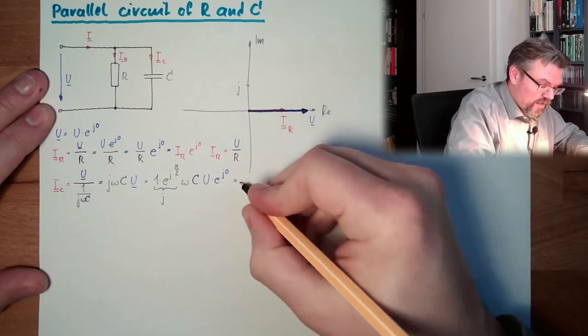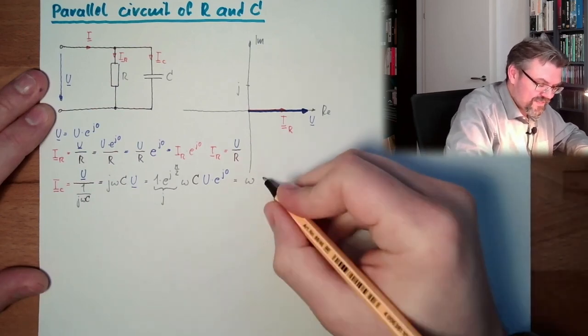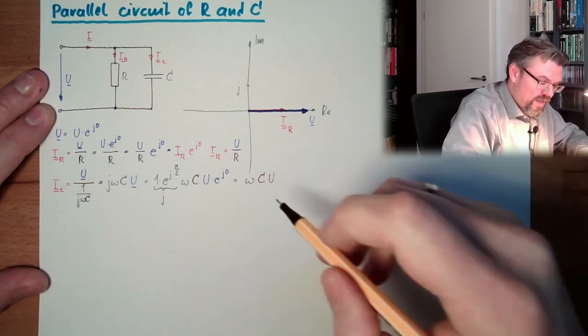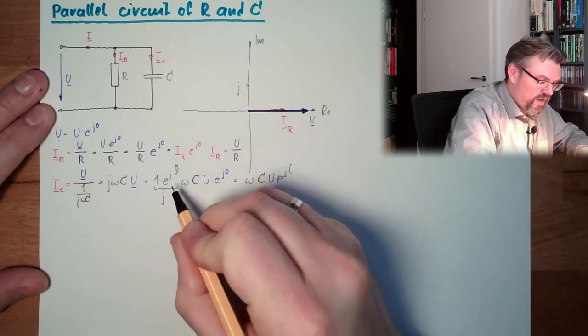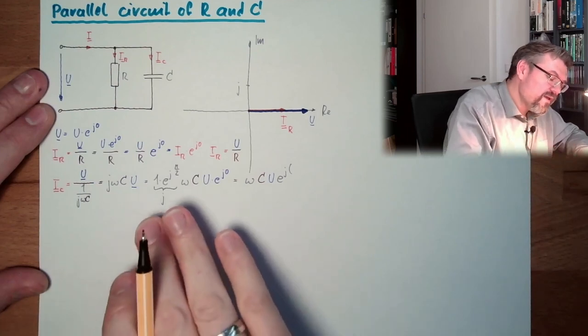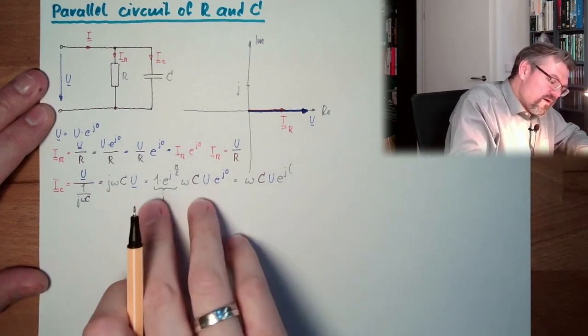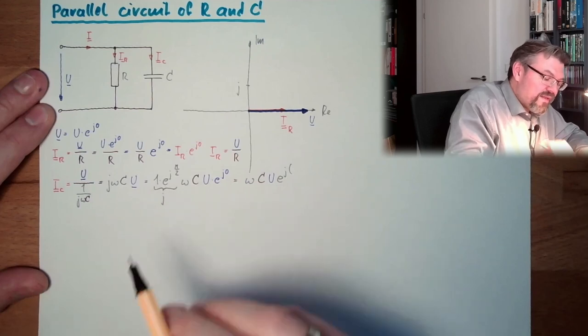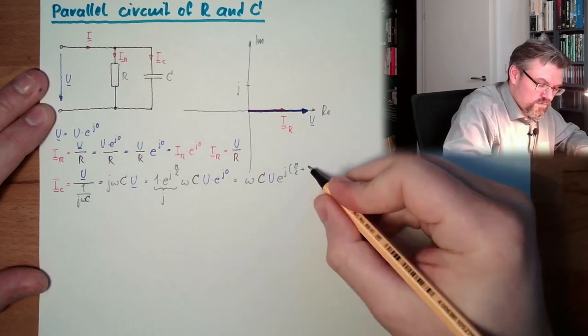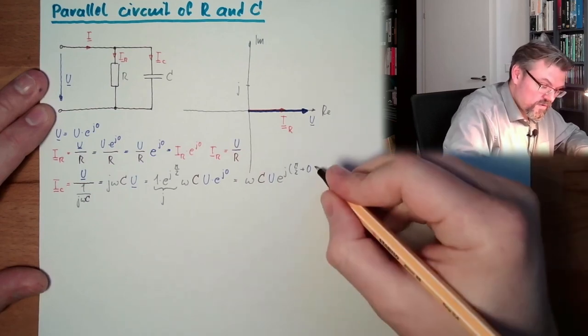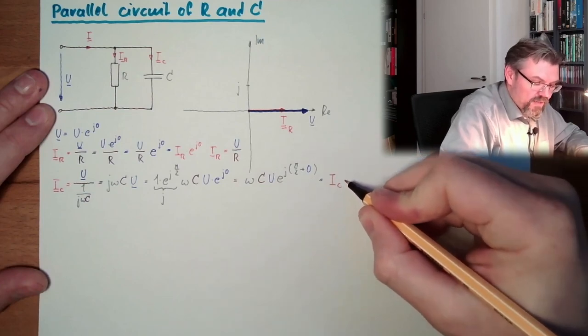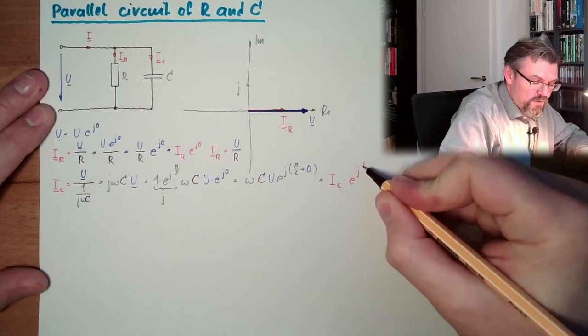And now I can multiply all the stuff. And I'm ending up at ωCU and then e raised by the power of j, and then we have to add those two because multiplying with the same value down is like adding the exponent. So we have π/2 plus zero.